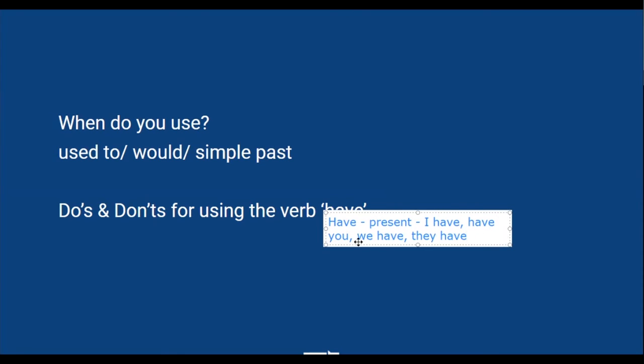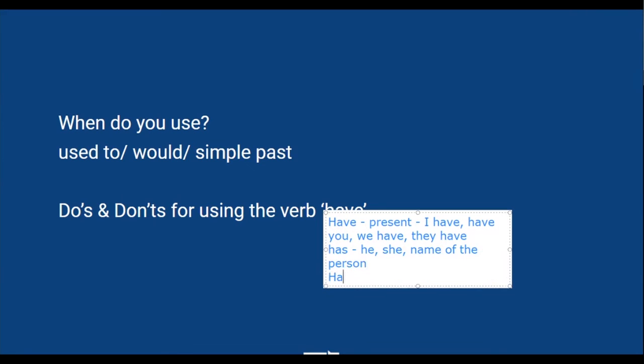'Have you completed your work? We have done this. They have completed the work.' So we usually use 'have' with I, you, we, and they. Then comes 'has' - we use it with a singular noun, with she, he, or a person's name. Then coming to 'had' - 'had' we use for past tense.